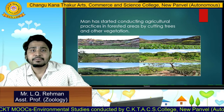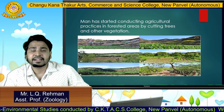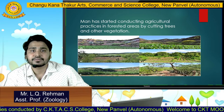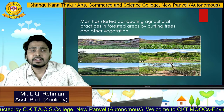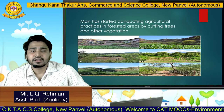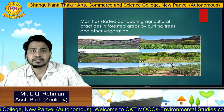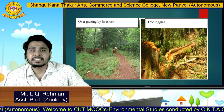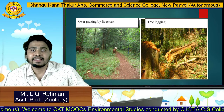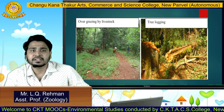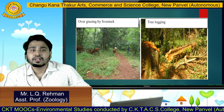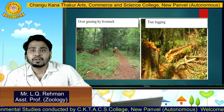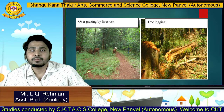As you can see, man has started conducting agricultural practices in forest areas by cutting trees and other vegetation, which leads to less space or less habitat for wild animals. Another reason is overgrazing by livestock, and tree logging is also a major issue which causes loss of habitat for wild animals and leads them to come into human populations.